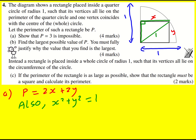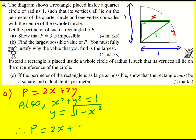What I did was try to get a single equation involving x and p. I made y the subject and eliminated it. So y is going to be the square root of 1 minus x squared. Because y is positive I don't need the minus. Therefore p is going to equal 2x plus 2 times the square root of 1 minus x squared.